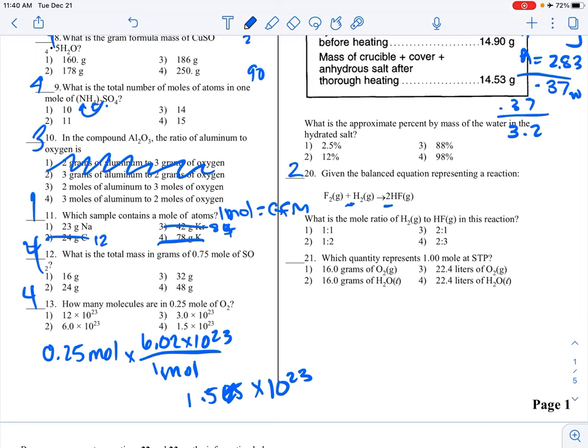Which quantity represents 1 mole at STP? If you're given grams, 1 mole equals the GFM. 1 mole also equals 22.4 liters of gas. The gram formula mass of O2 is 16 times 2, that's 32, so this is not right. The GFM of water is 2 plus 16, so 18, that's not right. Now we have 22.4 liters, but only one of these is gas. That's what we want.